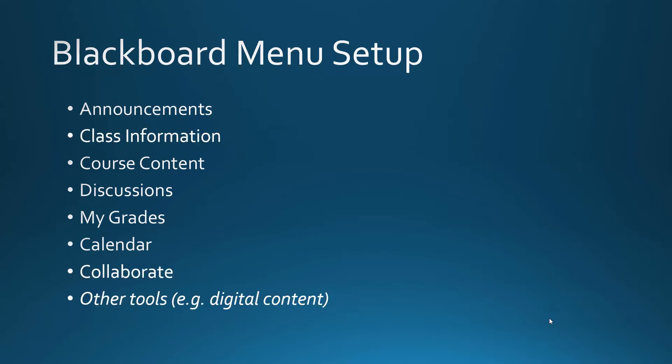So my new menu that I'm going to set up for the rest of this semester is going to include announcements, a class information folder, a course content folder where I'm going to have most of my materials, a discussion section, my grades, a calendar, a tool called Collaborate which will be a good way of meeting students online through Blackboard, and then perhaps other tools like digital content from your textbook or other external resources.